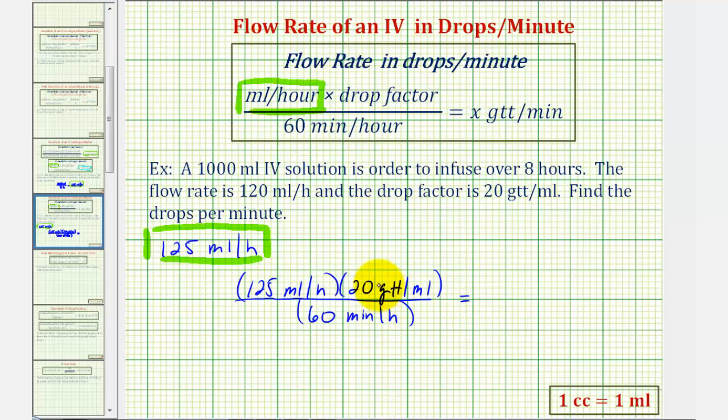If we're doing this by hand, it's going to be helpful to simplify this first. Notice 20 and 60 share a common factor of 20. There's one 20 in 20 and three 20s in 60. So this would be equal to 125 divided by three drops per minute.